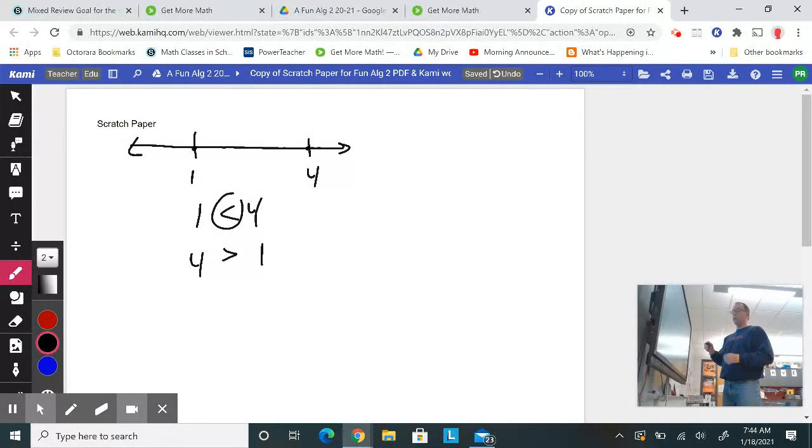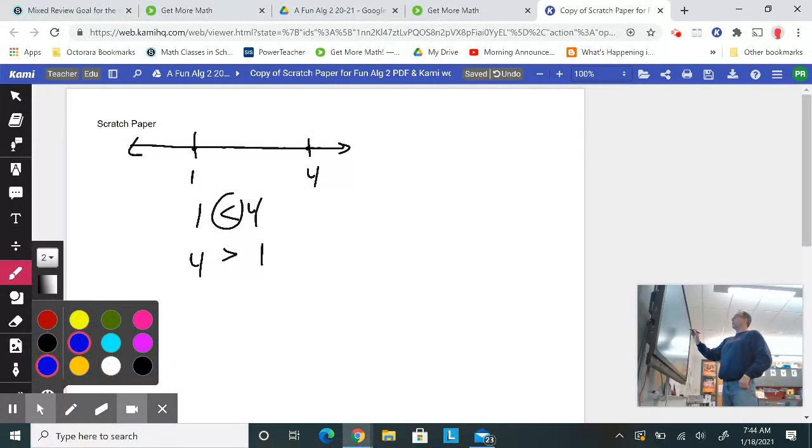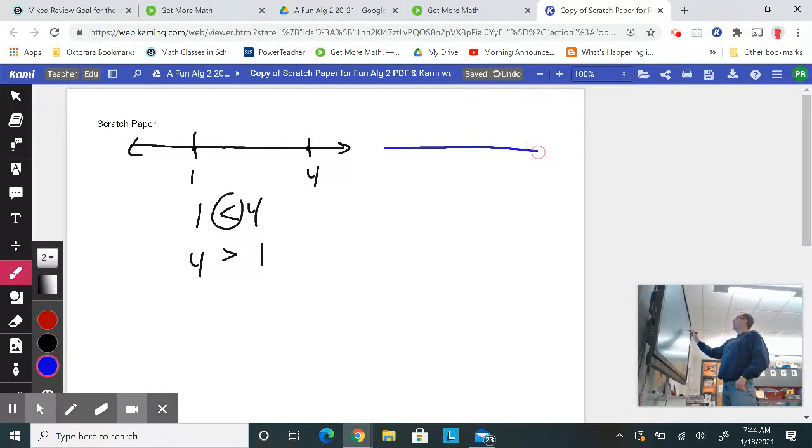So now let's apply that to variables. If I have, let's say I have a 5 here, I'm going to circle that. Right now I have x equals 5. That's the only point that works. It's 5 right on that point.